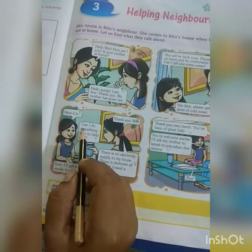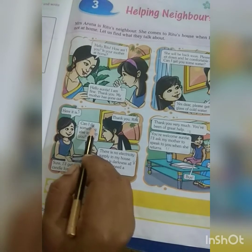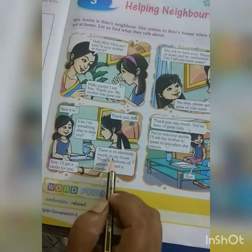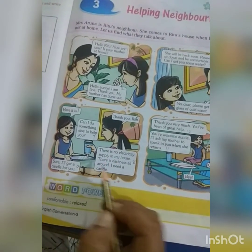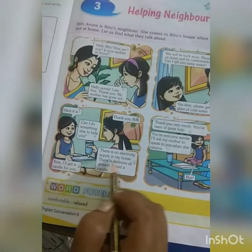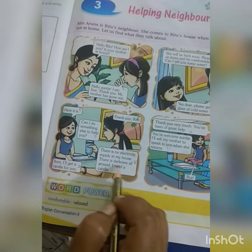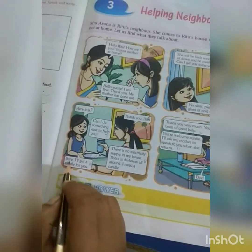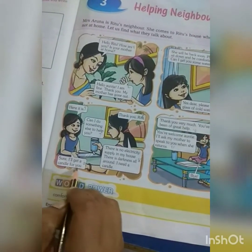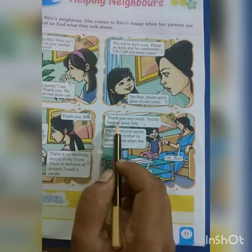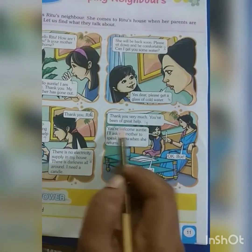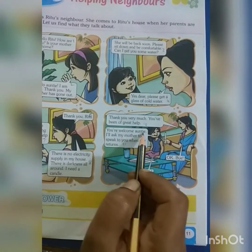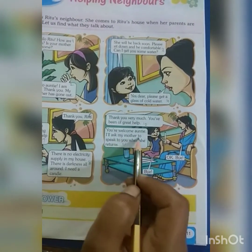Ritu: Can I do something else to help you? Auntie: There is no electricity supply in my house. There is darkness all around. I need a candle. Ritu: Sure, I will get a candle for you. Auntie: Thank you very much. You have been a great help. Ritu: You are welcome, auntie.